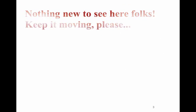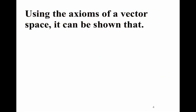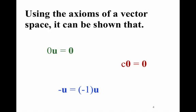These axioms would be the same 10 that we had from back in Chapter 1 — the ones that you had on your first test. Those are the axioms that apply as well for vector spaces, and you'll find those again in Section 4.1. Using the axioms of a vector space, it can be shown that 0 times U equals the zero vector. You can also show that a scalar C times the zero vector is the zero vector. And then you can show that minus U is equal to minus 1 times U.